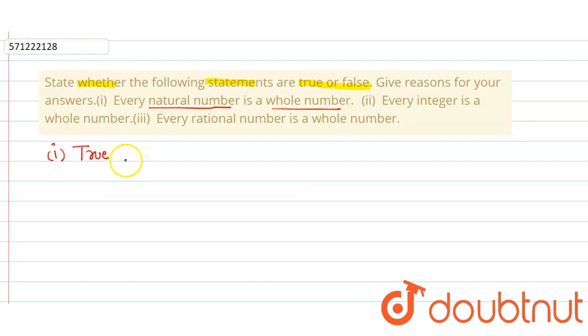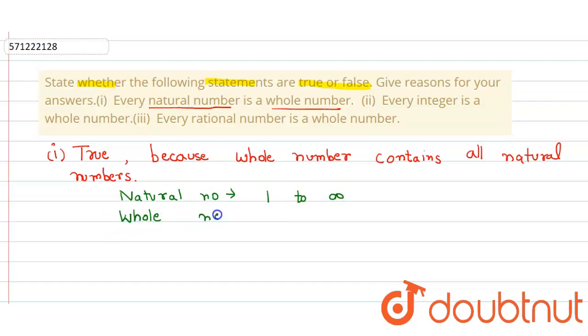Whole numbers contain all the natural numbers. Natural numbers start from 1 to infinity, and whole numbers are from 0 to infinity. So whole numbers already contain the natural numbers.